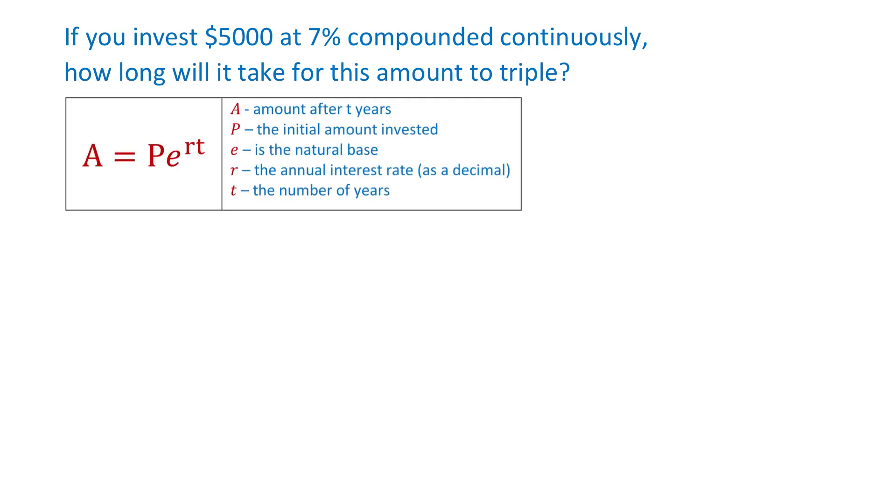The formula for continuous compounding is A equals Pe to the power of rt. In this formula, P represents the initial amount invested, e is the natural base, r is the annual interest rate as a decimal, and t is the number of years.